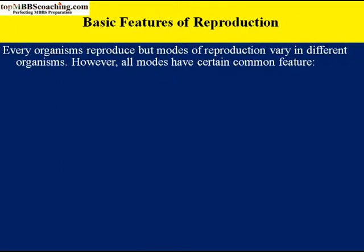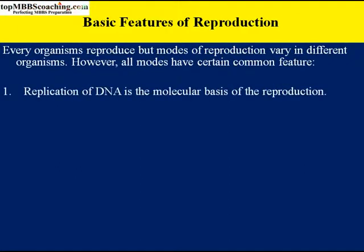What are these common features? First, replication of DNA is the molecular basis of reproduction — replication or duplication of DNA. DNA is deoxyribonucleic acid, also known as genetic material. In all types of reproduction, the main feature is duplication of DNA so that new offspring carry it. Replication of DNA is common in all types of reproduction.